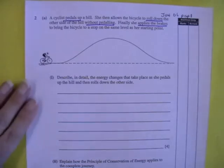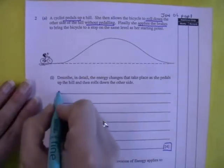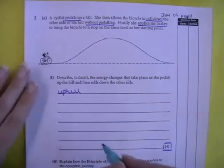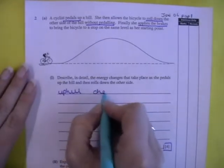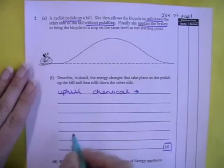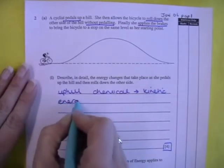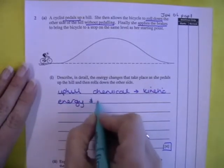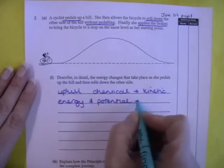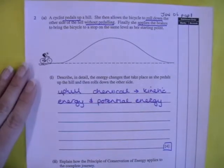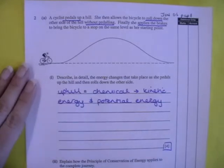We're asked to describe in detail, and there are four marks for this, so we're looking for four distinct points. In the uphill section, the energy changes are from chemical energy — the food she has consumed — and this is converted to kinetic energy. Because she's going uphill, it's also converted to potential energy as she increases her height or elevation. So going uphill: chemical energy is converted to kinetic energy and potential energy.